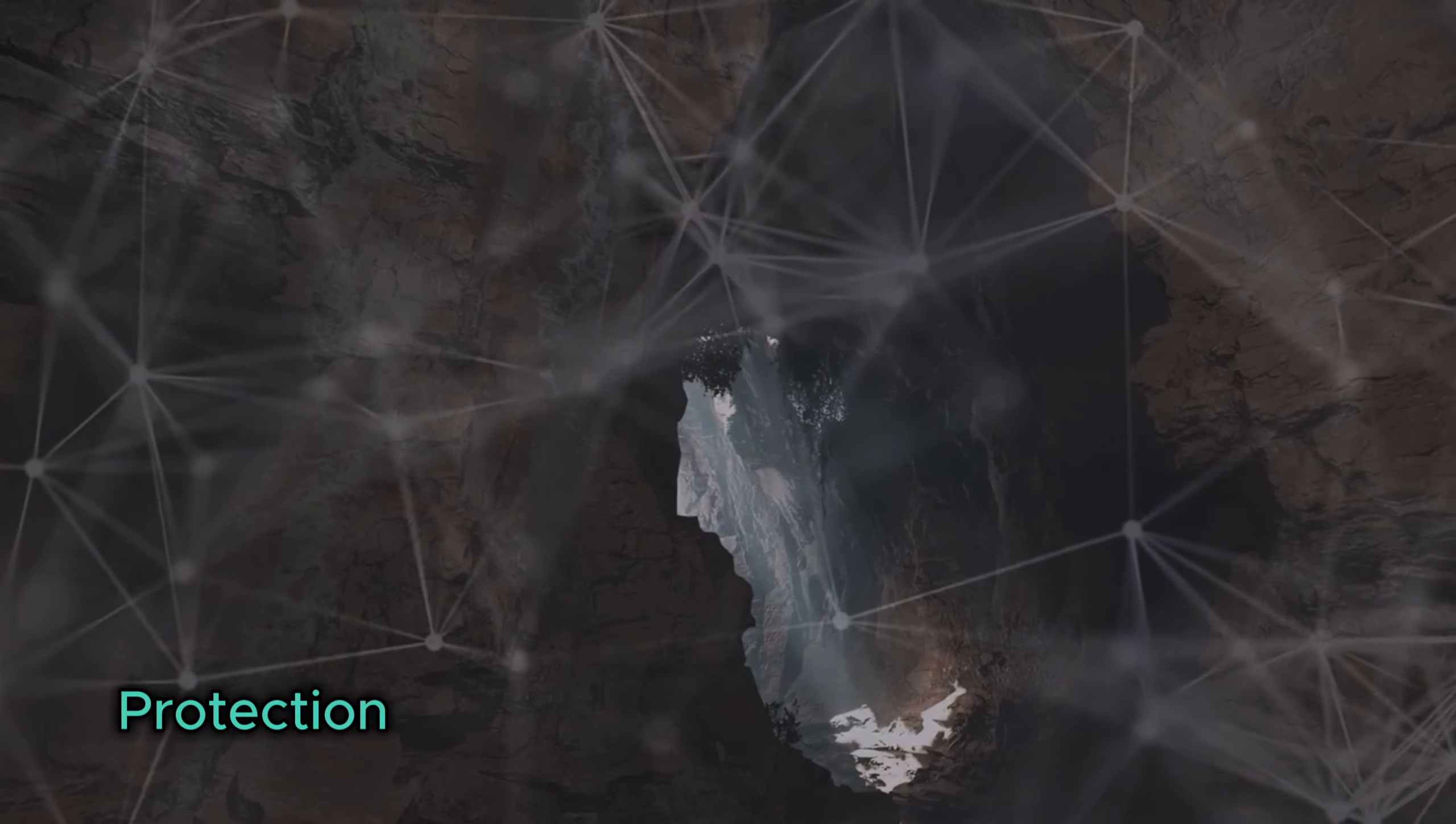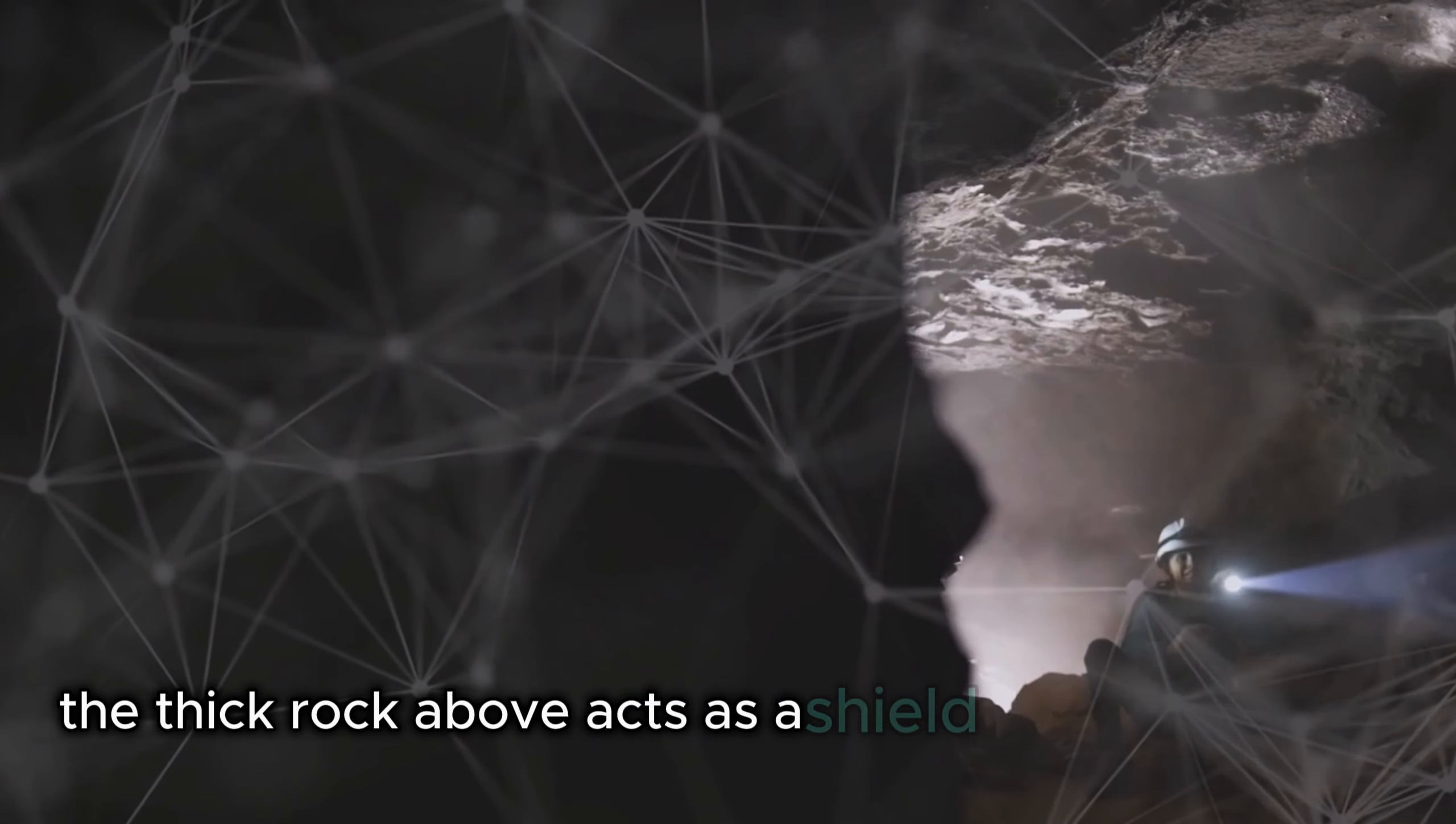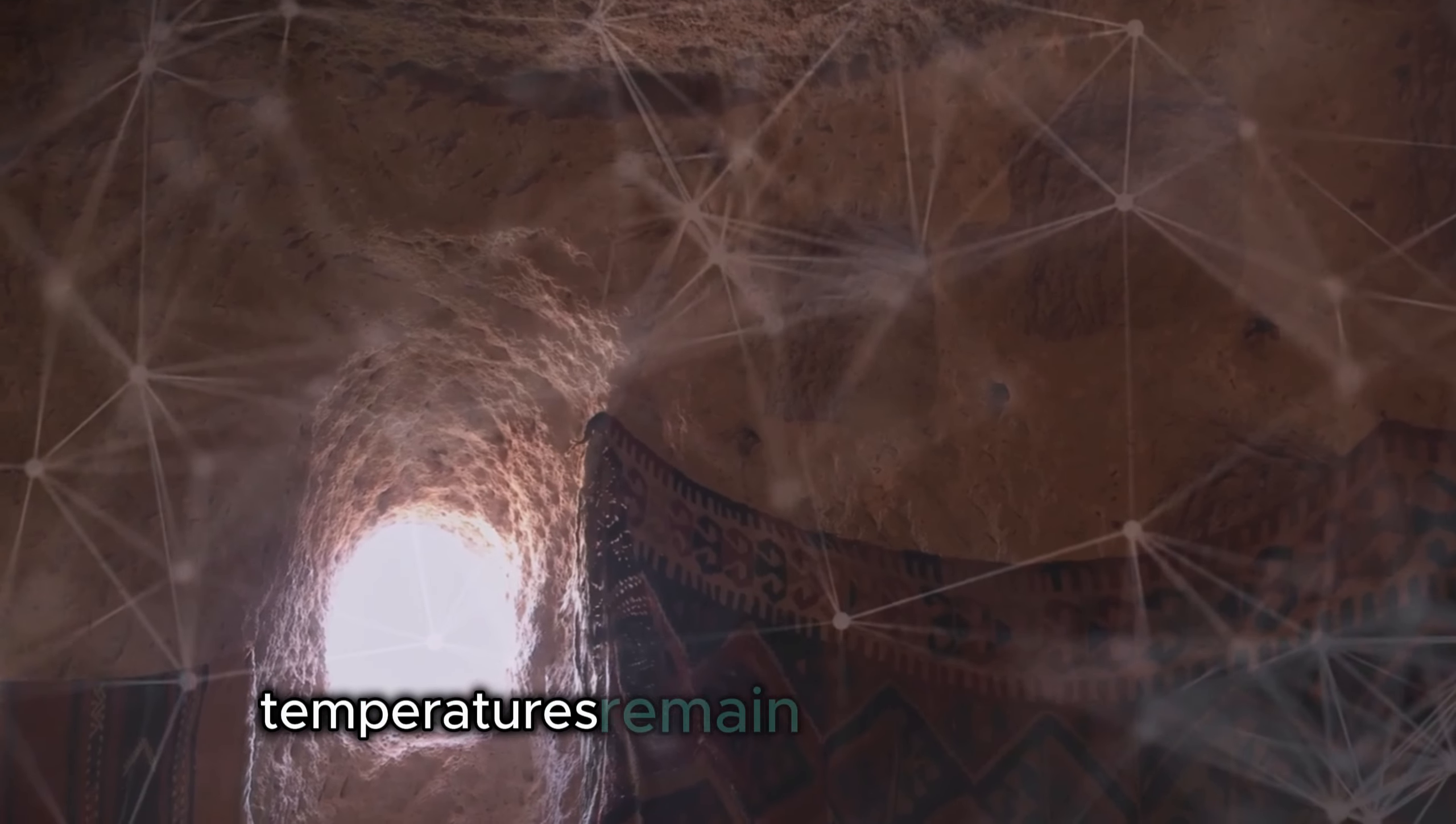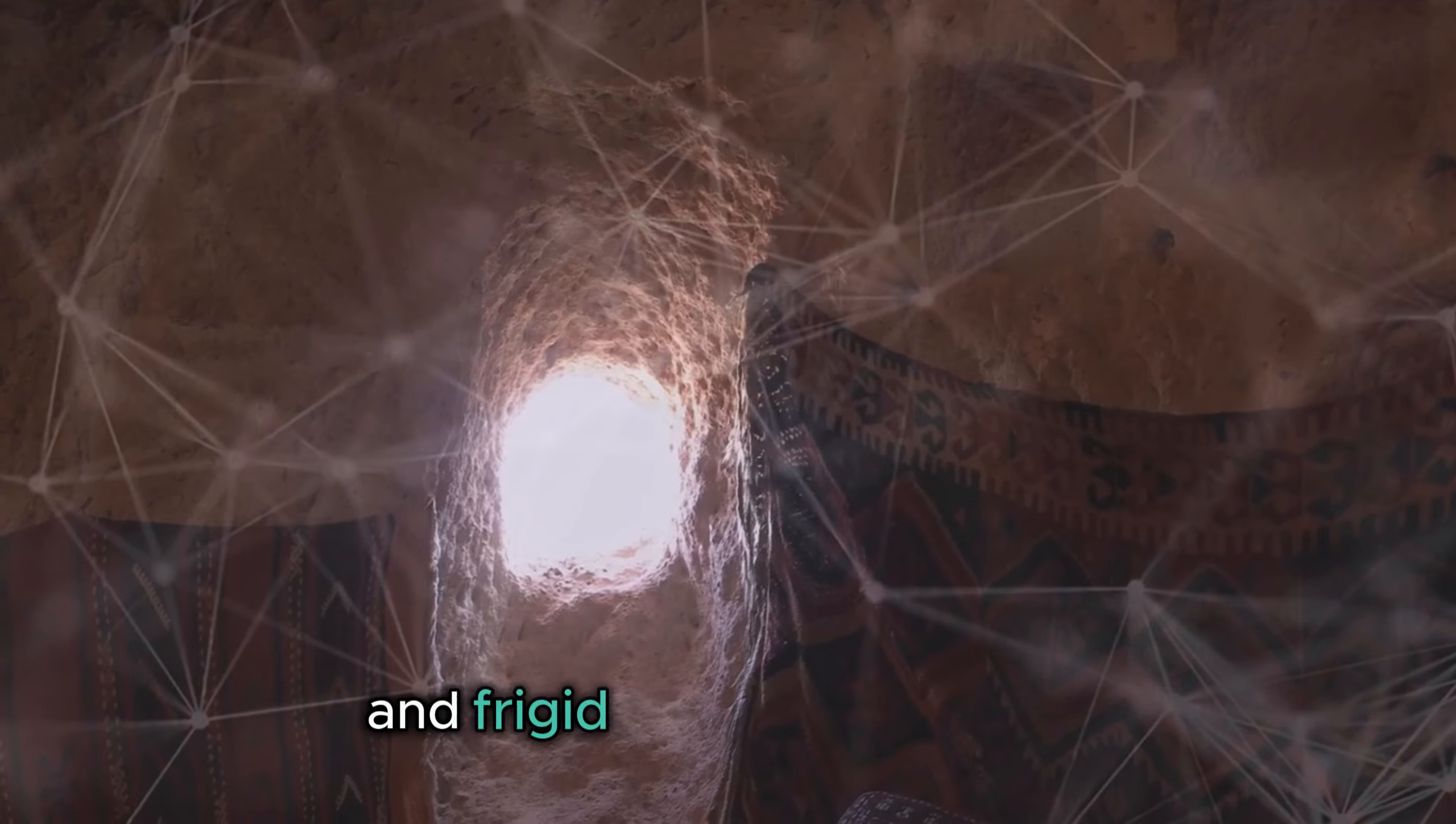They provide natural protection from the dangers of the lunar surface. The thick rock above acts as a shield against radiation and meteoroids. Inside, temperatures remain relatively stable, a welcome contrast to the scorching heat and frigid cold of the surface.